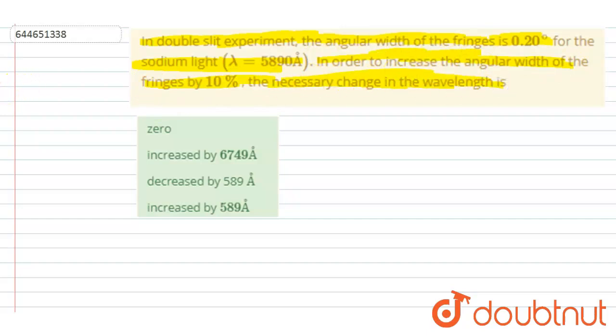So if I write down the relation between the angular fringe width and the wavelength, it is theta equals lambda over d. Here, lambda is the wavelength, theta is the angular fringe width, and d is the distance between the slits.